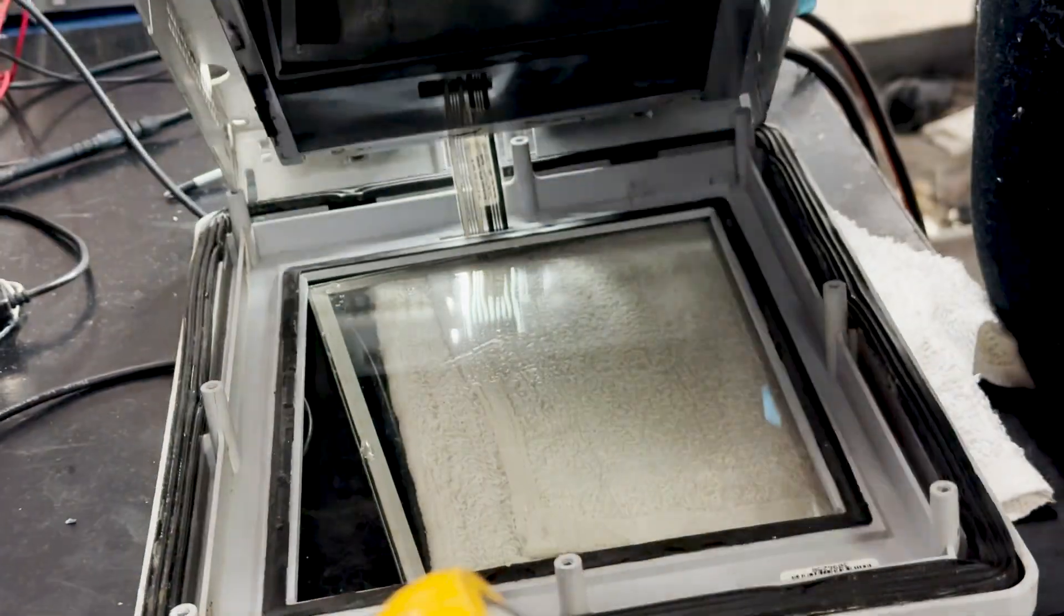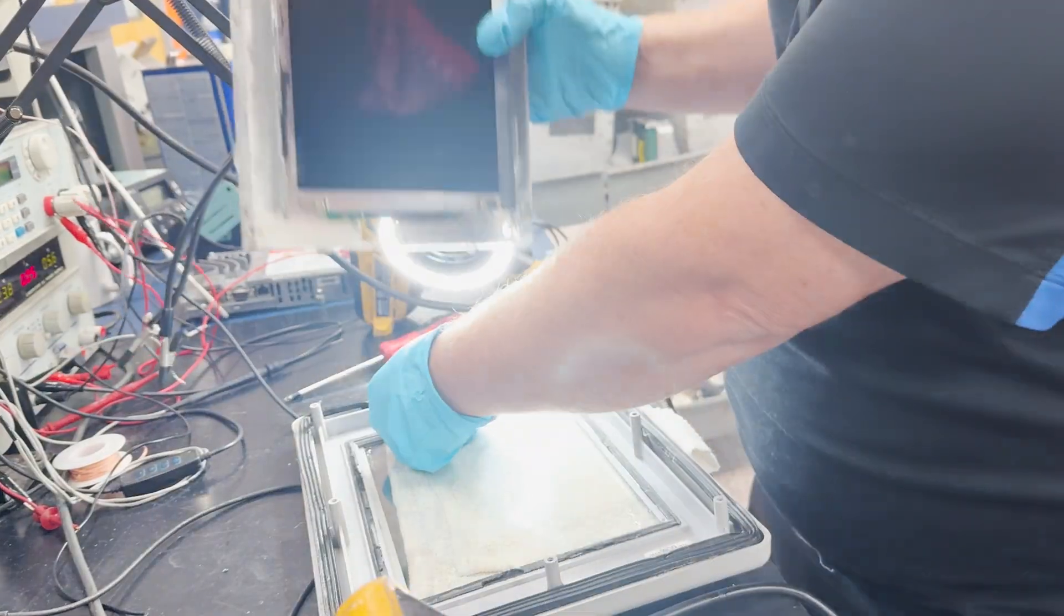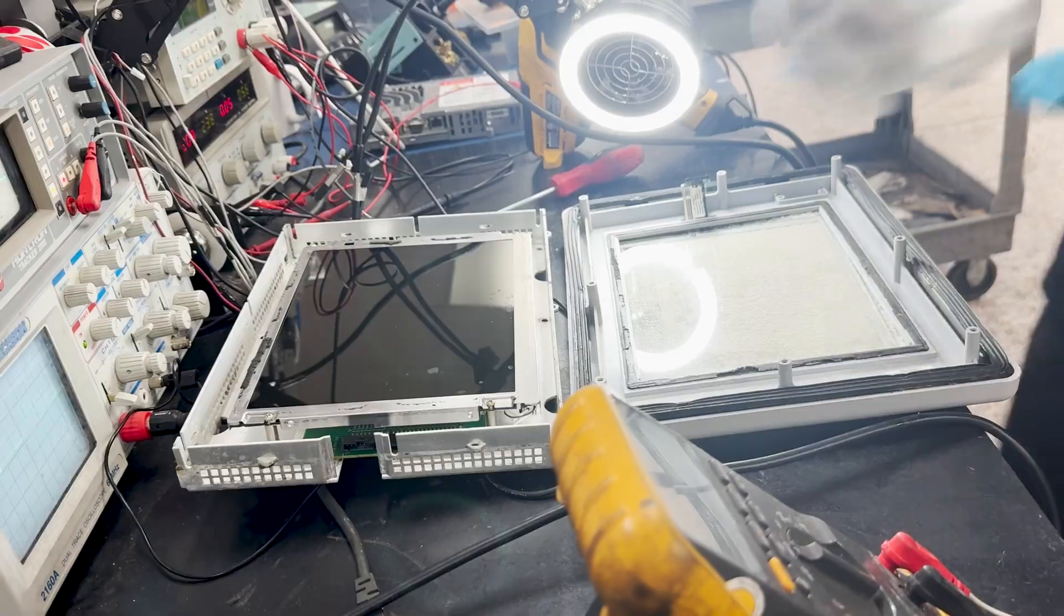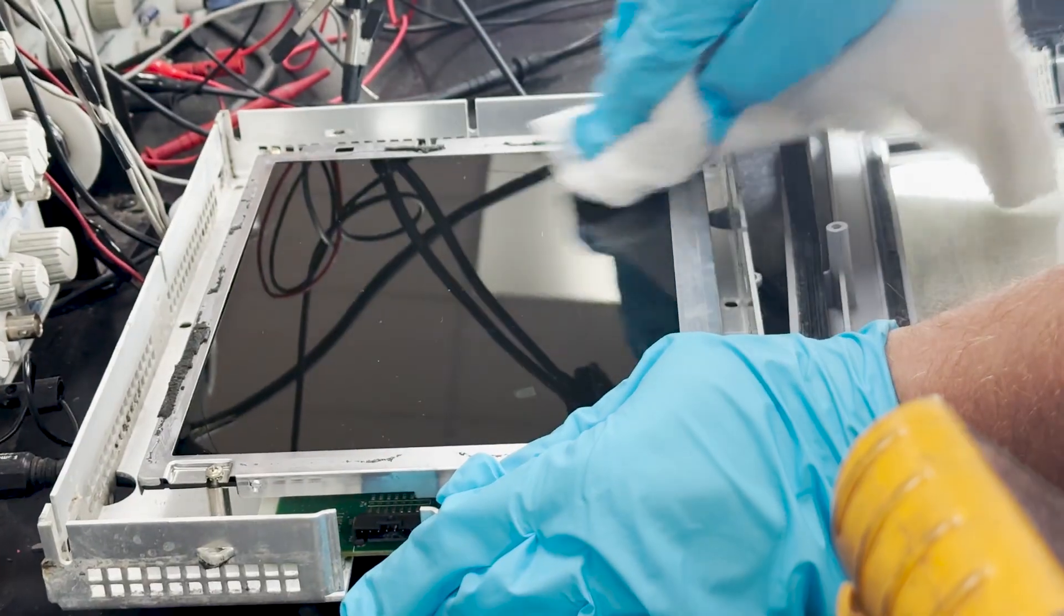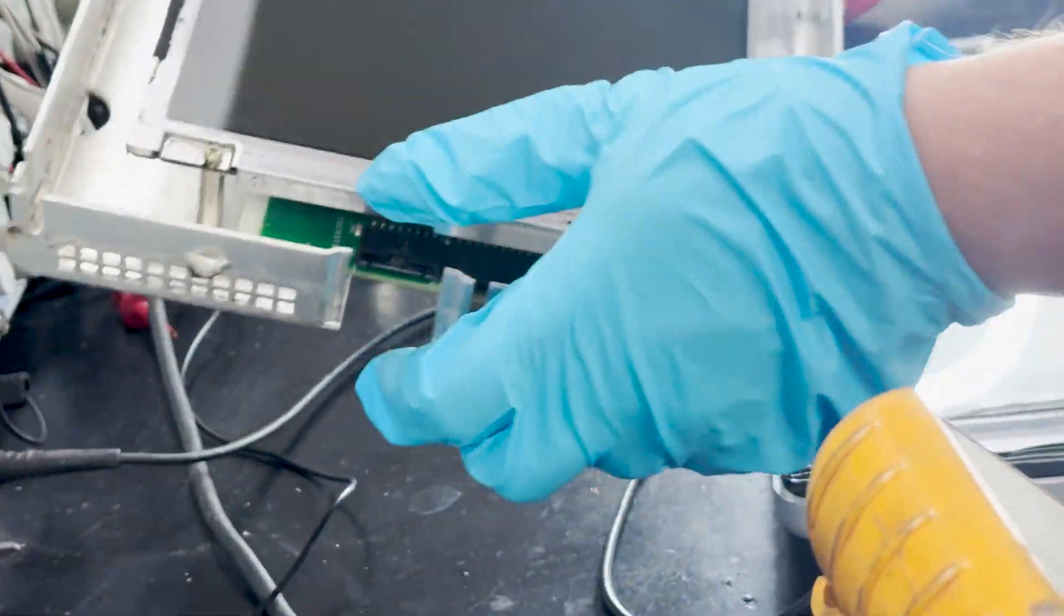Upon disassembly, the LCD panel will be transferred to a specialized thermal chamber. This controlled environment will subject the panel to a precise temperature profile, facilitating the evaporation of any residual moisture.